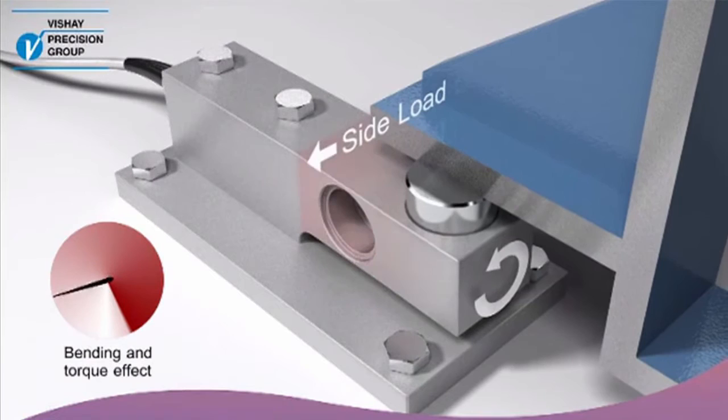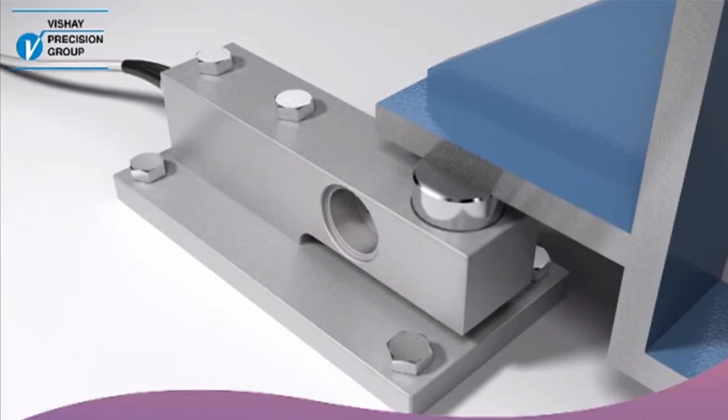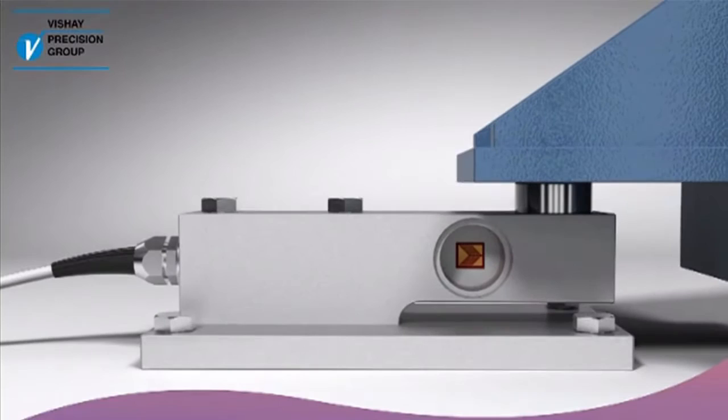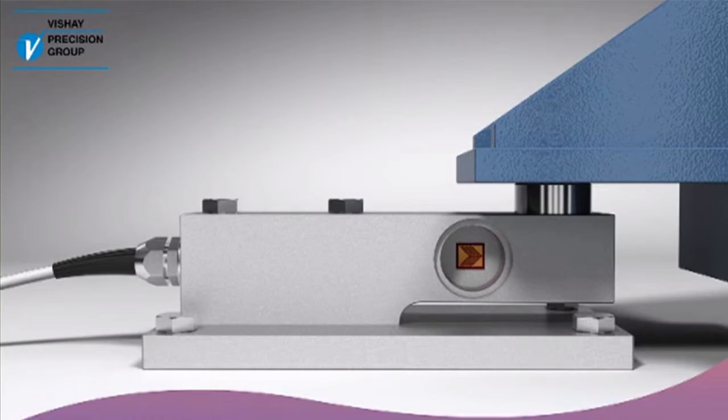Simple shear force load cells work well in ideal conditions and most have excellent specifications on paper. BLH and Nobel weighing systems, brands of VPG process weighing, invented a unique load cell that continues to deliver great performance even when conditions are far from ideal. We call it the KISS load cell.